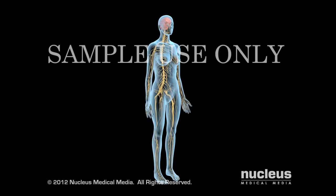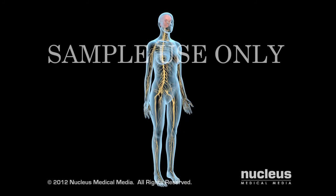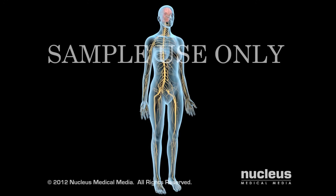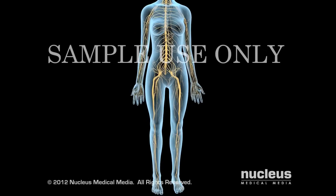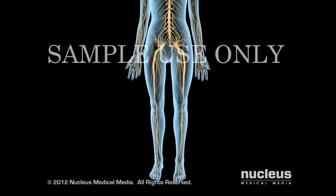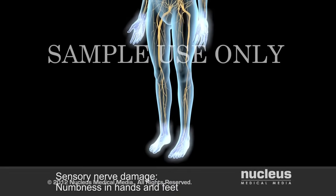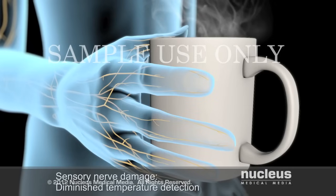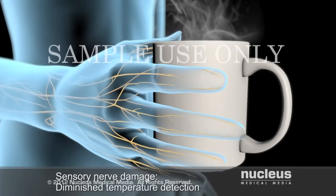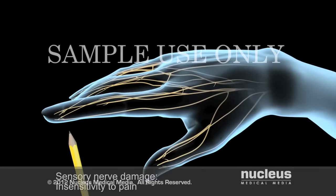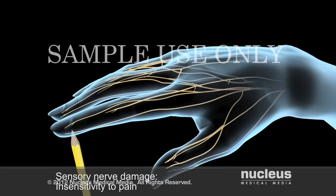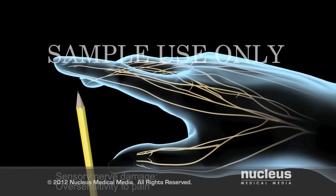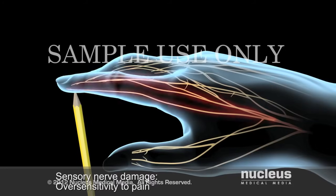One or all of the three nerve types may be affected, and symptoms are specific to each. Damage to sensory nerves, characteristic of diabetes, can lead to numbness in your hands and feet, with diminished ability to detect temperature, insensitivity to pain, or oversensitivity to pain.